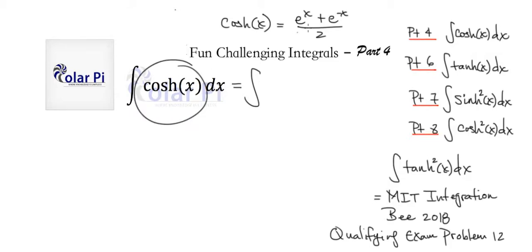Since cosh is defined as I have up here, we know we can rewrite our given integral to read e to the x and then plus e to the negative x, all divided by two and then dx.